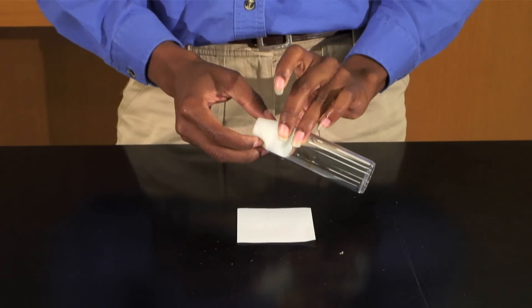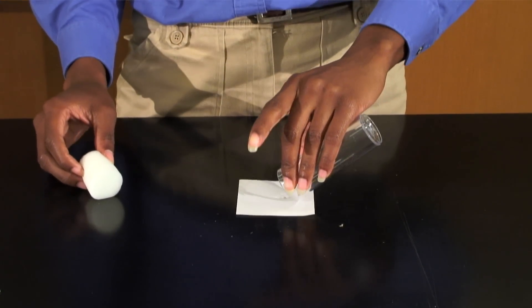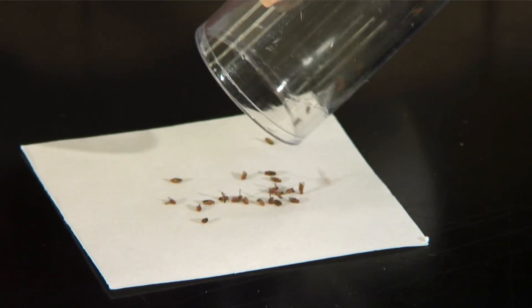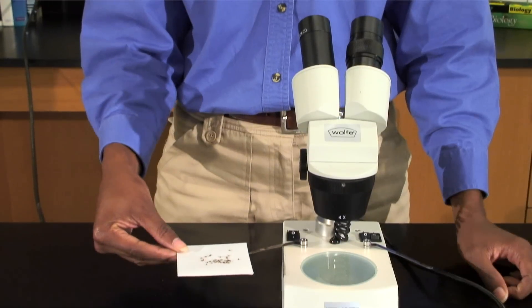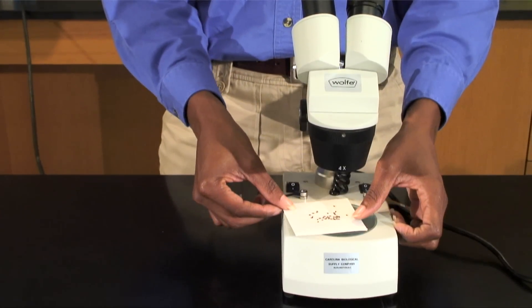Remove the plug from the vial of sleeping flies and tap them onto the sorting card. Place the sorting card on the stage of the stereoscope with the power as low as it can be.